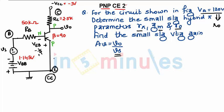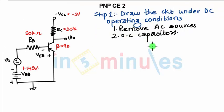To start with, what is our first step? We draw the circuit under DC operating conditions. That is we remove the AC sources. So this AC source will be removed from the circuit. Then there are no more capacitors to open circuit.